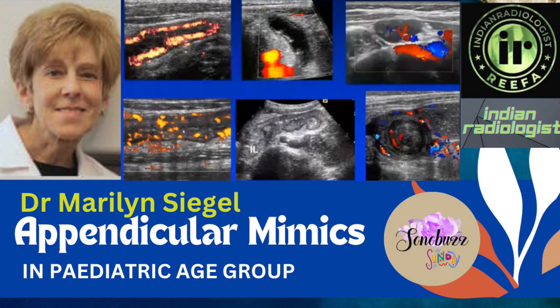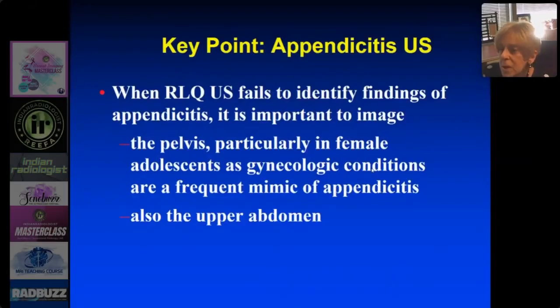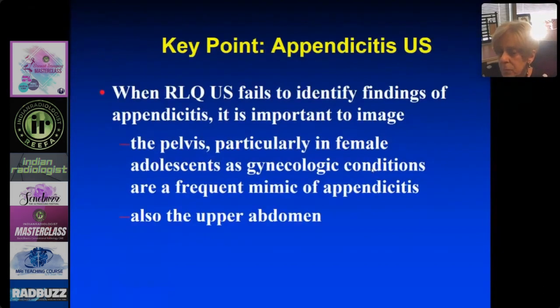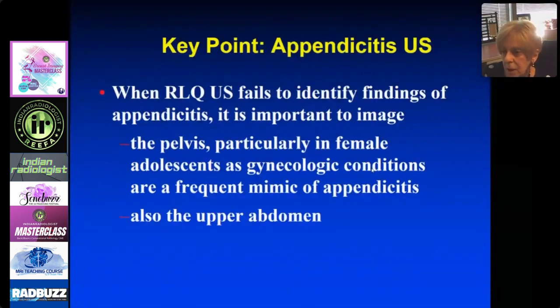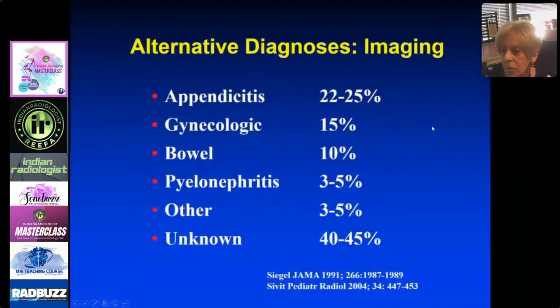When the right lower quadrant ultrasound fails to show findings of appendicitis, you need to look elsewhere. Look at the pelvis, particularly in female adolescents, as gynecologic conditions can mimic appendicitis — we'll look at that in the next talk. Also look at the upper abdomen. Appendicitis accounted for 22 to 25% of diagnoses.